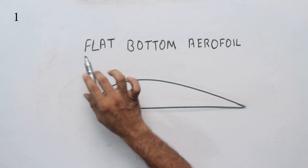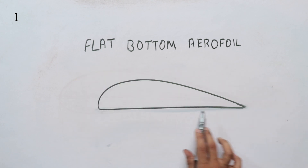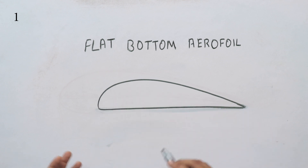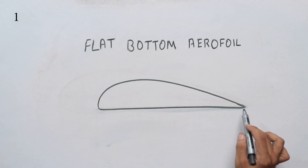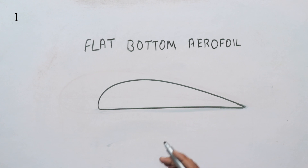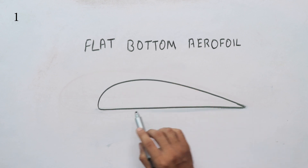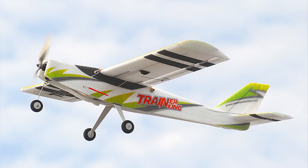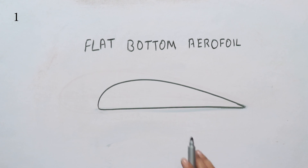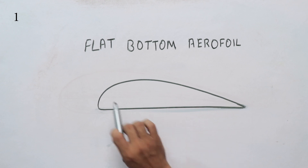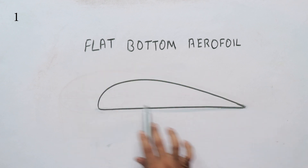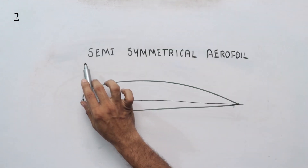There are different types of Aerofoil. The main ones we need to discuss include the flat bottom Aerofoil, where the lower surface is flat and the upper surface is curved. If we need to fly in a 3D plane with negative lift, there is also a trainer type of Aerofoil. This brings us to semi-symmetrical Aerofoils.